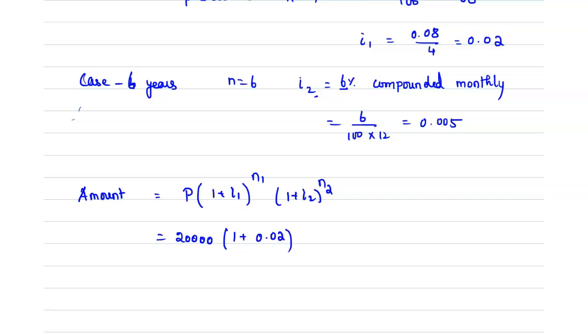Which is equal to 20,000 multiplied by (1 plus 0.02) power 16, since it is compounded quarterly, so 4 times 4, multiplied by (1 plus 0.005) power 6 times 12.